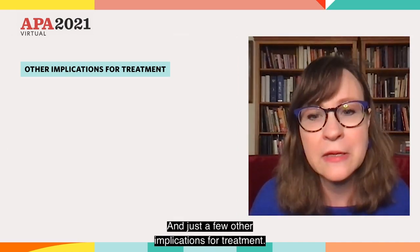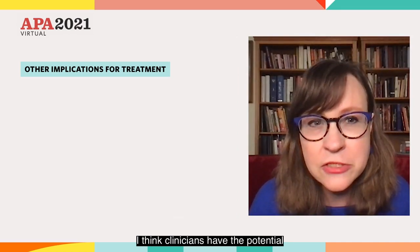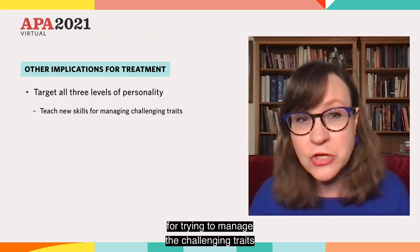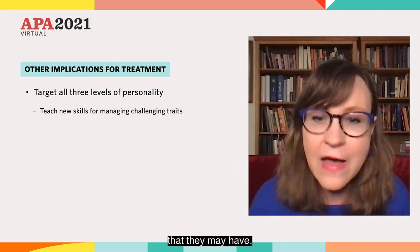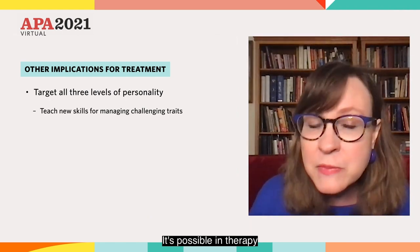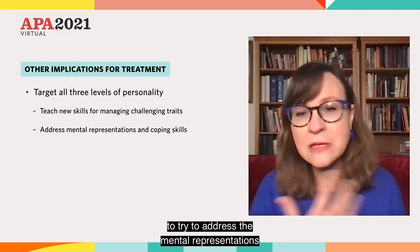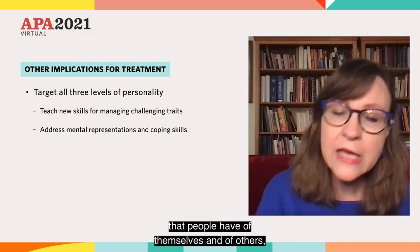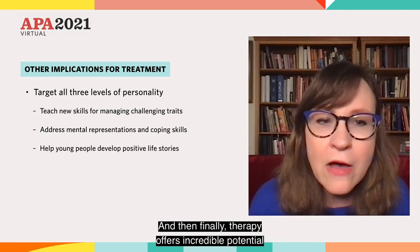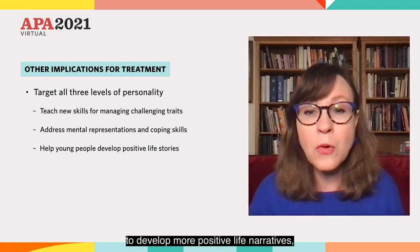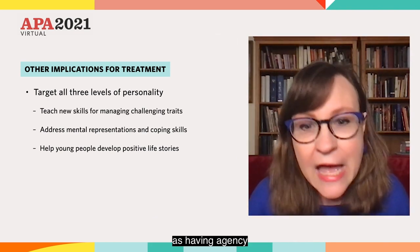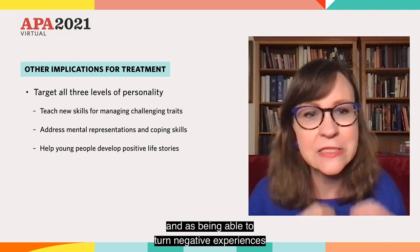And just a few other implications for treatment. I think clinicians have the potential to target all three levels of personality in working with young people. Adolescents can be taught new skills for managing challenging traits — high levels of neuroticism, low levels of conscientiousness and agreeableness, for example. It's possible in therapy to address the mental representations that people have of themselves and of others, and also to help them develop better coping skills. And then finally, therapy offers incredible potential for helping young people to develop more positive life narratives, where they can begin to see themselves as having agency and as being able to turn negative experiences into good ones.